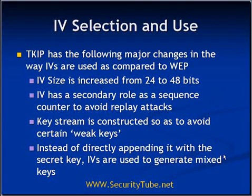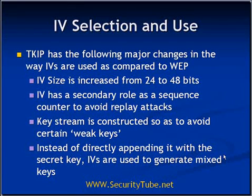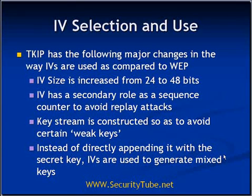In the case of TKIP, one IV will be used only once per session. Once a session is established and session keys have been defined, a single IV will be used only once from any transmitter. That was not the case for IVs in WEP. Additionally, the keystream is constructed so as to avoid certain weak IVs. Instead of directly appending the IV with the secret key, IVs are used to generate mixed keys, and after generation of the mixed key, they are appended with the secret keys so that weak IVs will always be avoided.